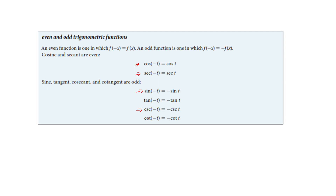Anything based on tangent or cotangent would have to be odd, because the cosine part of those definitions always turns out to be the same, but the sine function part of them both involve sine, which turns into a negative. So here's our list: cosine is even, secant based on cosine is also even, and everything else is odd.